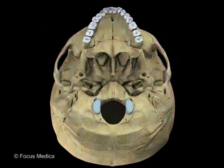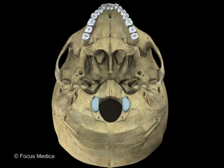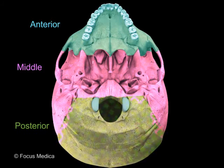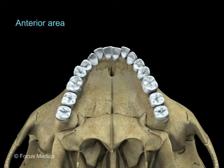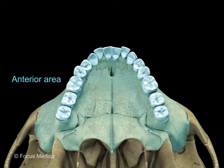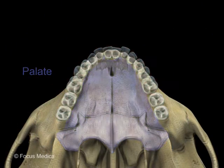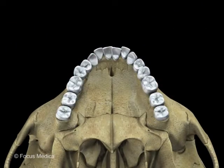The skull base is the area on the inferior aspect of the skull. It is divided into anterior, middle, and posterior areas. The anterior area is characterized by the palate, alveolar arch, and teeth.